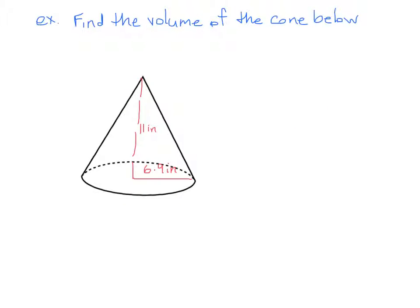All right, so as we just learned, the volume of a cone is equal to one-third pi r squared times height. So substituting our values in, it's a third pi and we know our radius here is 6.9 inches so we go ahead and put 6.9 inches squared.